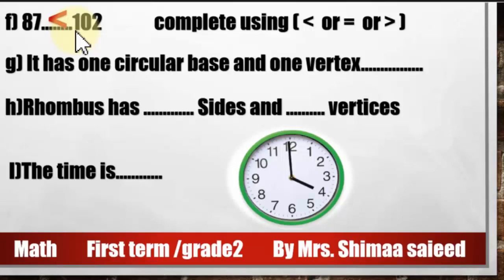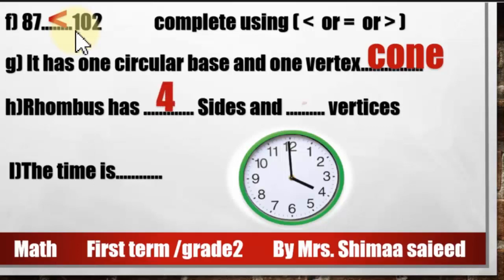Which solid has one circular face and one vertex? Is it a cylinder or a cone? Excellent — cone! Because a cylinder has two circular faces. A rhombus has 4 sides and 4 vertices.